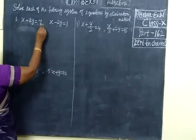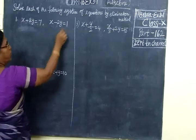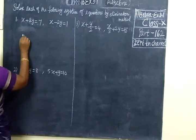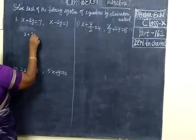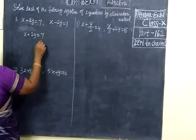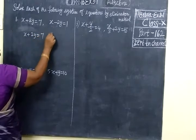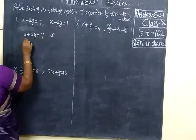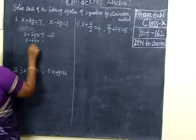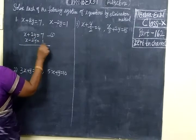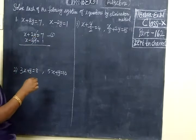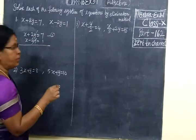This is equation 1 and this is equation 2. Write them one by one. First: x plus 2y equal to 7 — that is equation 1. Then x minus 2y equal to 1. Now directly you can cancel the y terms. No need to change the sign.